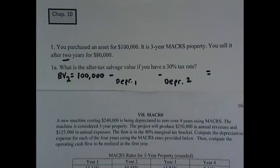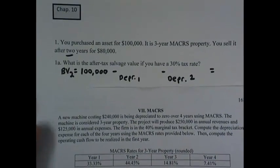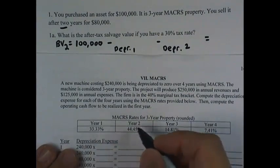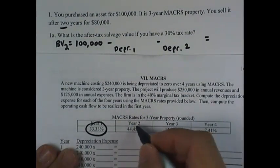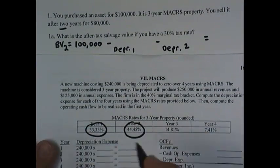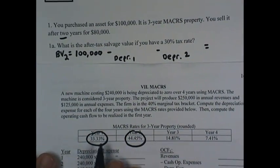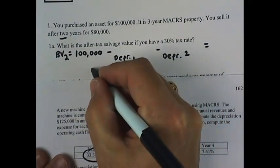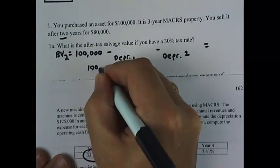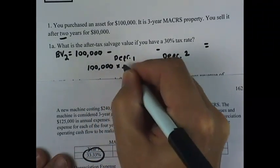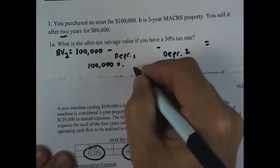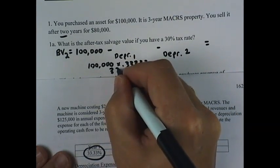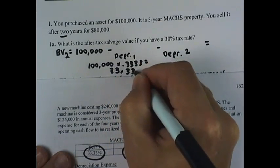On page 162 of the course notes, and it's also found in the textbook, we have the depreciation factors for three-year MACRS property. For year one, it's 33.33 percent. The depreciation expense for year one is $100,000 times the 0.3333 depreciation factor, which is $33,330.